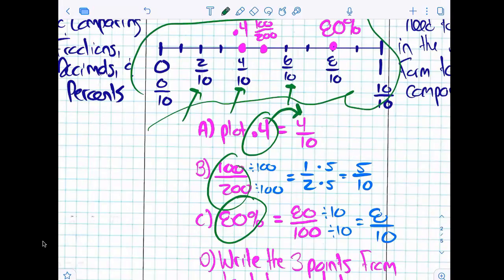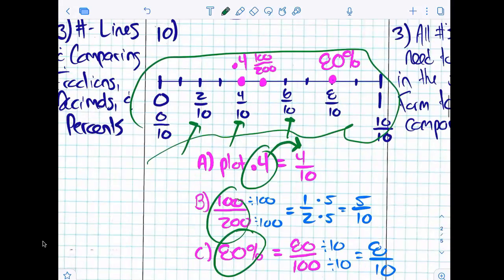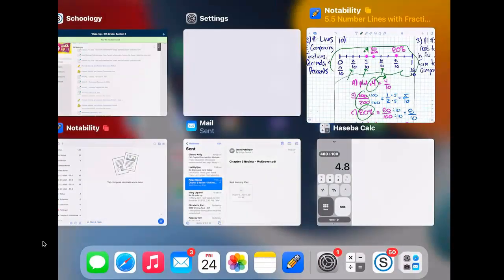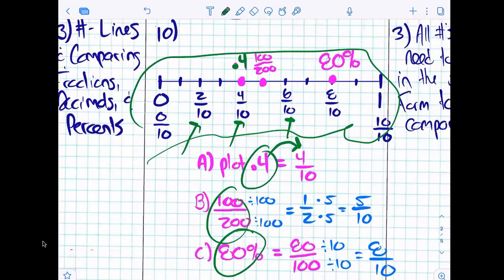So four tenths is the same as 0.4. Now can I put 0.4 on the number line? Yeah. When I label it, should I label it 0.4 or should I label it four tenths? 0.4, which is four tenths. Good.